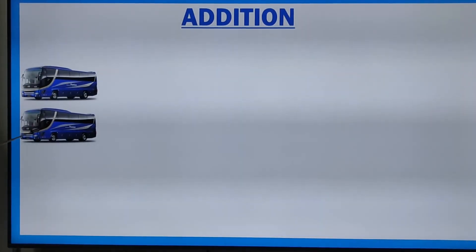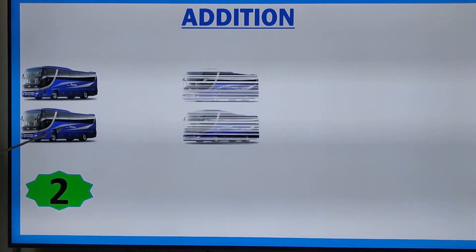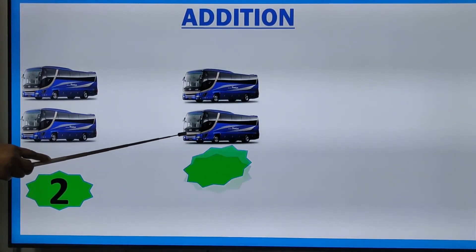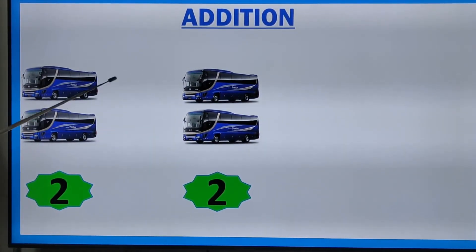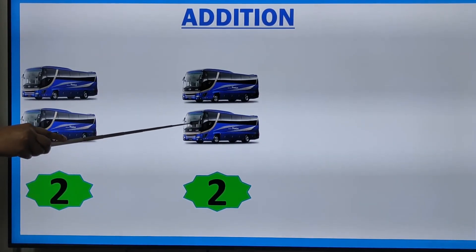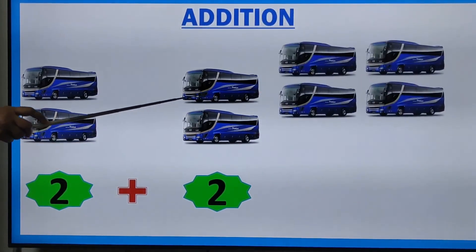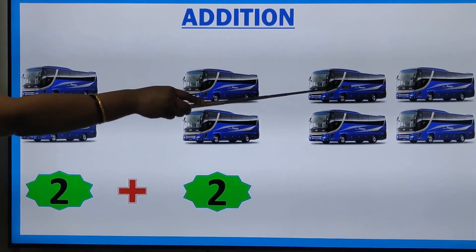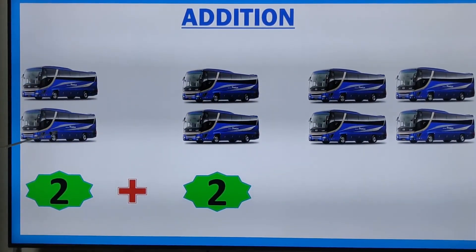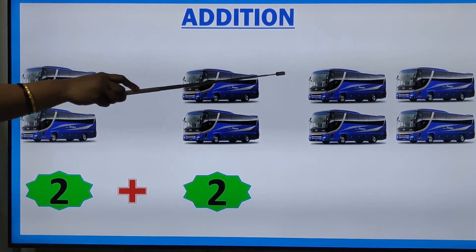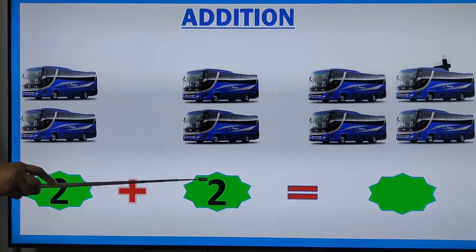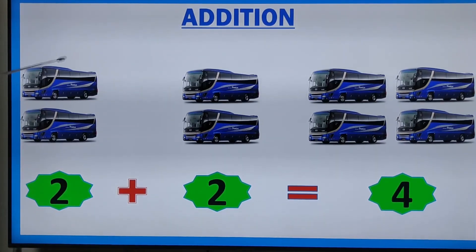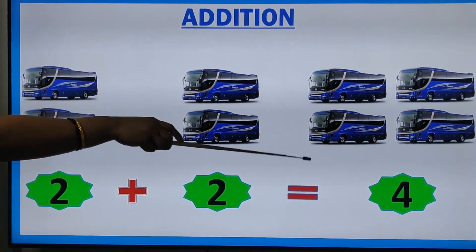How many buses are there here? Two buses — one, two. Now we are adding two more buses with that. Two buses plus two buses together makes four buses — one, two, three, four. Two plus two is equal to four.